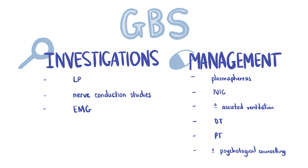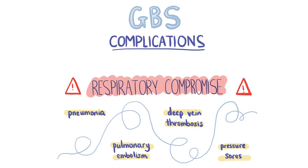Occupational therapy and physiotherapy can help in the recovery period. Psychological counselling is also essential for many patients who may struggle to adjust to the sudden change in their abilities and circumstance. GBS can affect the respiratory muscles, which is a serious and potentially fatal complication, so GBS patients are usually treated in ICU to prevent airway compromise. Other complications include pneumonias such as HAP or aspiration pneumonias, pulmonary embolism, DVT, and pressure sores — most of which result from prolonged hospital stay and immobility.